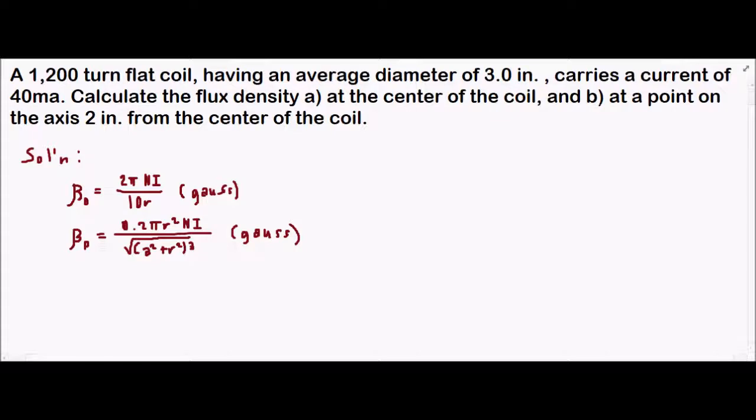Let's solve first our condition A. This is at the center of the coil. Our N is 1,200 turns, current I is 40 milliamps or equivalent to 0.04 amps. The diameter is 3 inches.